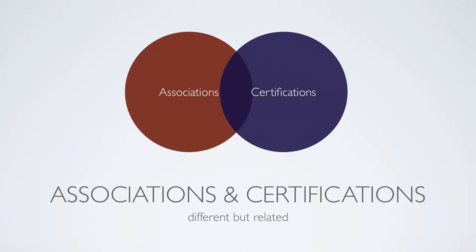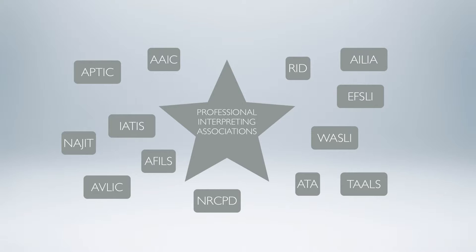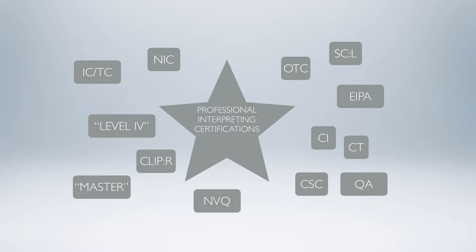First of all, there's a difference between associations and certifications. They're often related, but they're not the same. For example, the RID grants the NIC, but they're two different things. The RID is the association, and the NIC is the certification. There are many different professional interpreting associations, and there are all different kinds of interpreting certifications for professional interpreters, and you'll read about some of those as well.